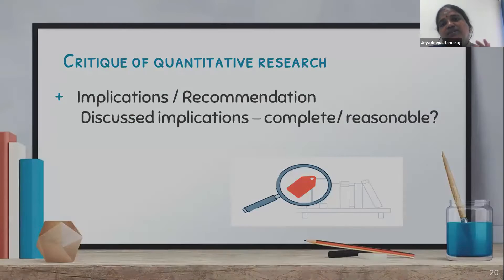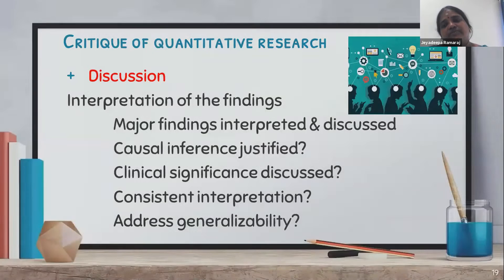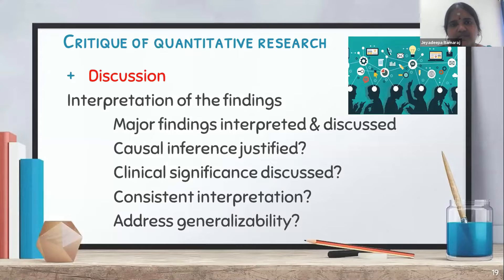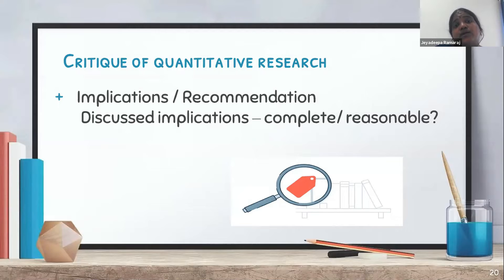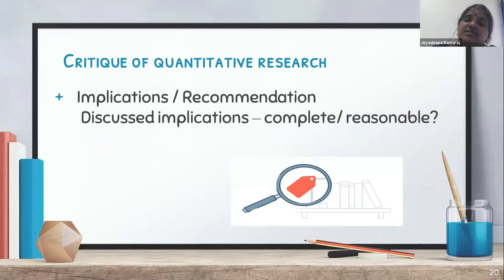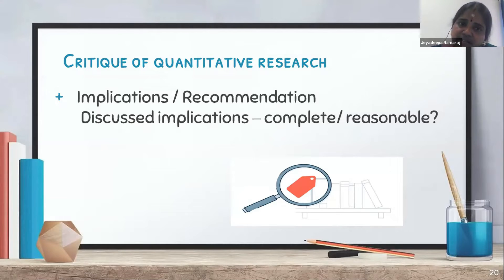Moving on to critiquing of a quantitative research article — implications and recommendations. The present study is always a source of a new research study, as research is a chain where one follows the other. You will have to check whether the recommendations from this study are followed, whether they are complete, and whether reasonable justifications are given.